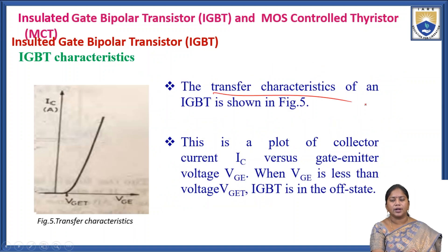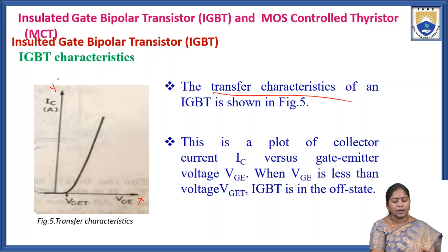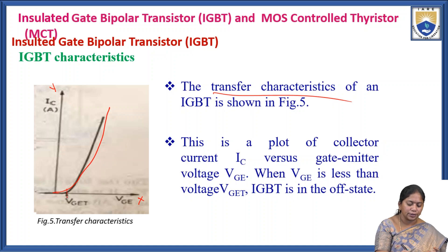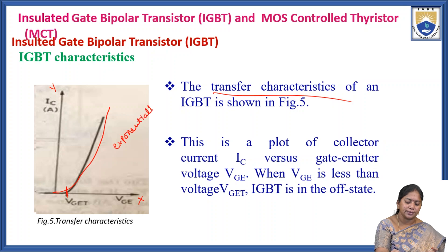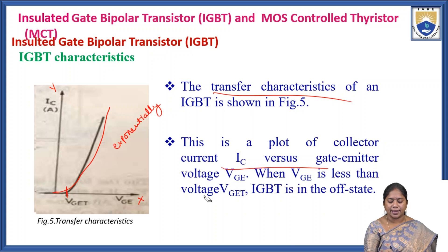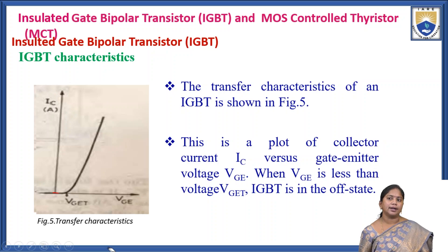The transfer characteristics of the IGBT are shown with gate-emitter voltage on the x-axis and collector current on the y-axis. After the threshold voltage, the current increases exponentially. When VGE is less than the threshold voltage, the IGBT is in the off state; above the threshold voltage, the IGBT is in the on state.